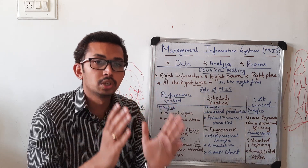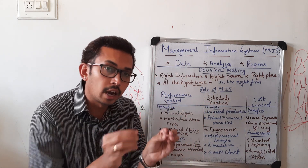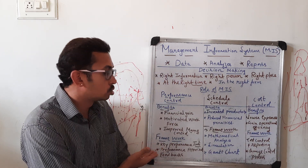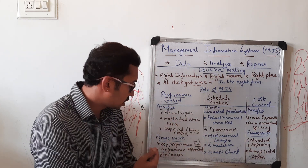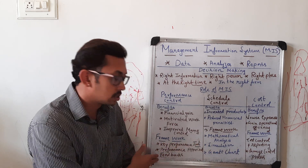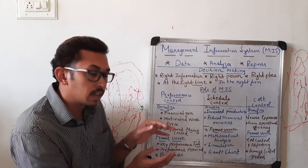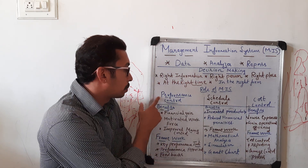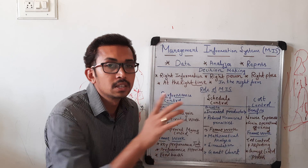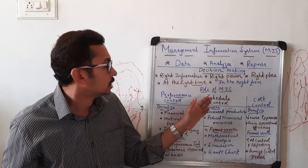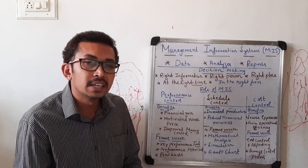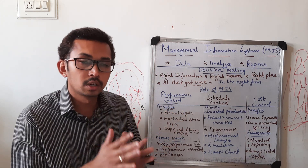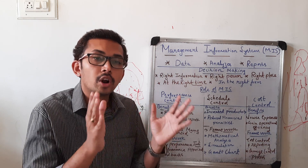To achieve these performance control benefits, the MIS system uses standard frameworks and tools such as Key Performance Indicators (KPIs), performance appraisals, and feedback. The next role is schedule control, where the MIS system is used to monitor the status of each and every activity in a project.